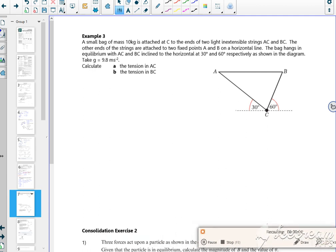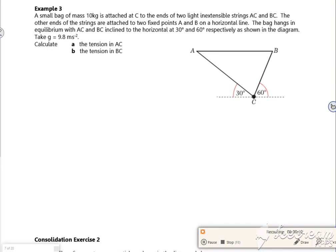Hi, so this is our last video for our first lesson, which is really the last video of the second lesson. Right, so let's have a look at this then. So it says a small bag of mass 10 kilos attached at C by two ends of two light strings. Two strings, two tensions, that's important.